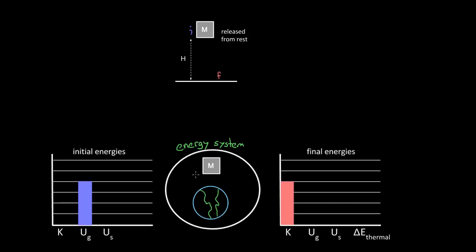You might object: we learned earlier that when work is done, energy gets transferred and the total energy of an object might change. The Earth is pulling down on this mass — the Earth is exerting a gravitational force downward, and the object's moving downward through some displacement, so the Earth is doing positive work on this mass, giving it energy. Doesn't that mean the energy of the system's going to change? The answer is no, because the Earth is also part of our energy system. So the Earth did do work on the mass and the mass gained kinetic energy, but since both were part of the system, this work was internal to the system, and internal work never changes the total energy of the system.